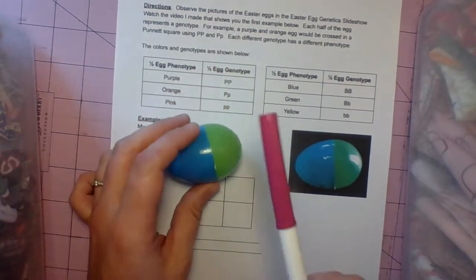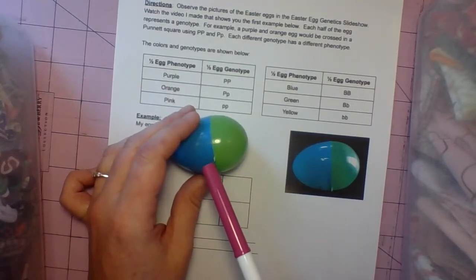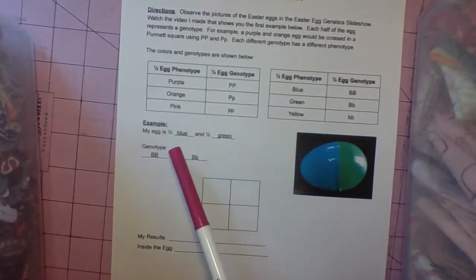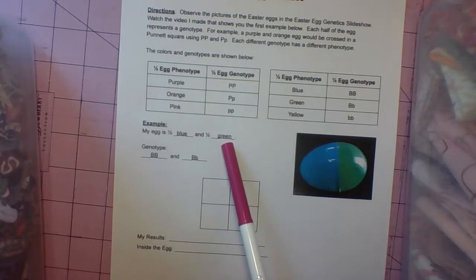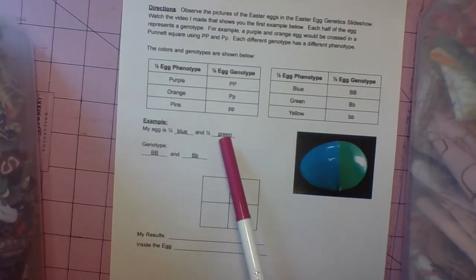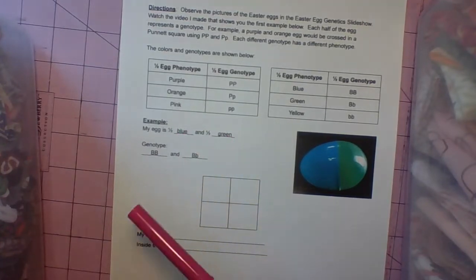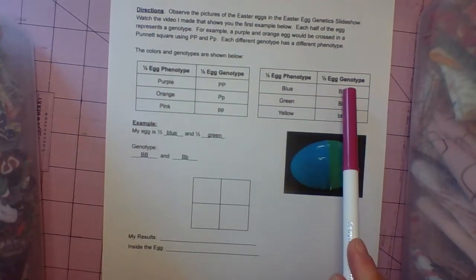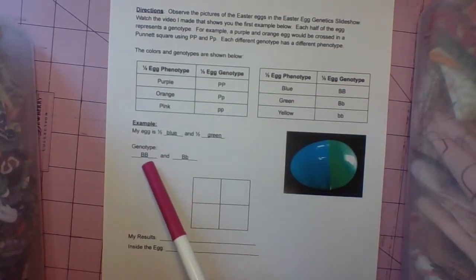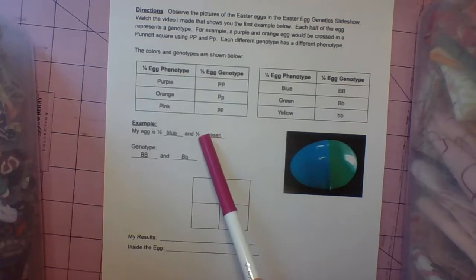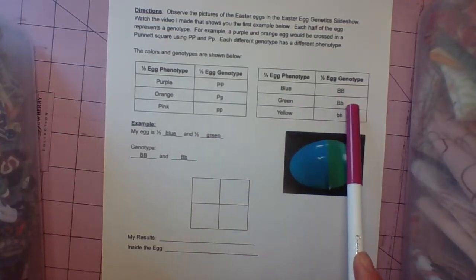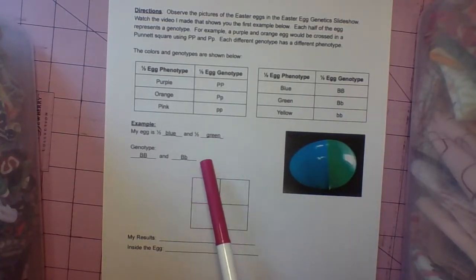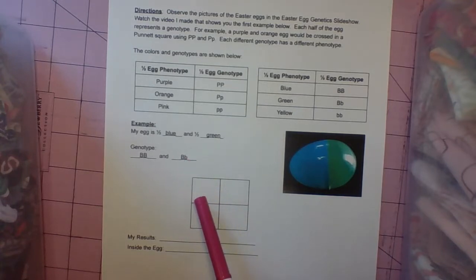This is our example. Half of the egg is blue and half is green. I already typed in there for you that half is blue and half is green. Because half is blue, genotype big B, big B, I typed in there that blue is both uppercase, homozygous dominant. And that half that's green, big little, it's heterozygous, uppercase lowercase b.